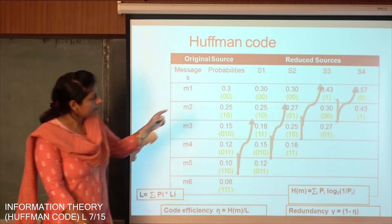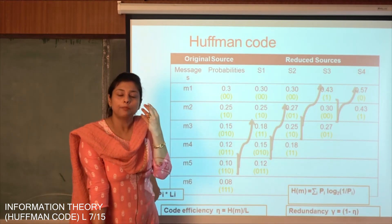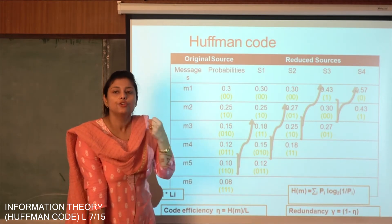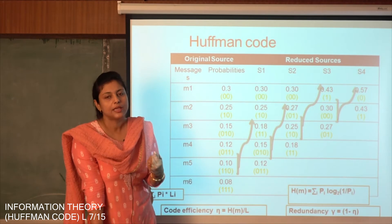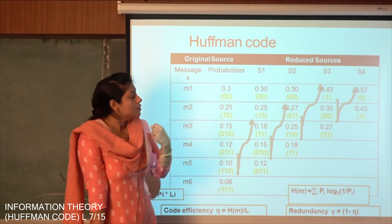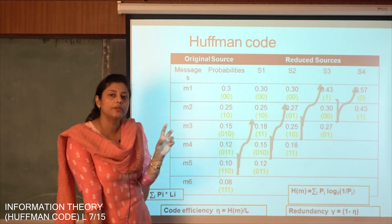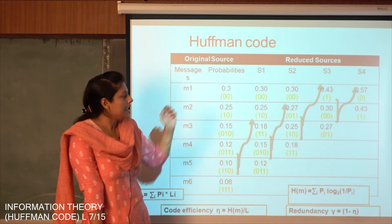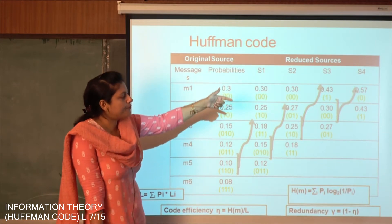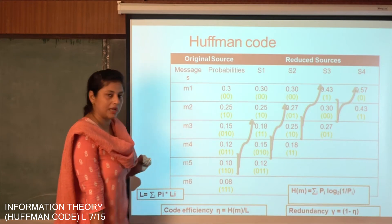As I said, the probabilities which are high should be encoded with lower number of bits and probabilities which are low should be encoded with higher number of bits. So we start with 0.57, since it is higher we encode it with a single 0 bit. And we go below to 0.43 and encode it with one single bit which is 1.